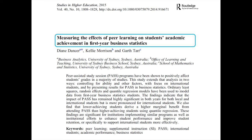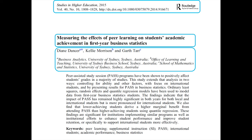First, we can see that the title clearly relates to the topic of benefits of peer learning. Looking at the authors, we can see that they are from reputable higher education institutions in Australia, which lends credibility to the paper and is of particular relevance given we're also in Australia. We can see that the article was published in an academic journal called Studies in Higher Education, making it both credible and relevant to the topic, as peer programmes often occur in higher education settings. Importantly for our context, this research is current as it was published recently in 2015. So far, this article appears to be highly relevant and credible, and therefore useful.